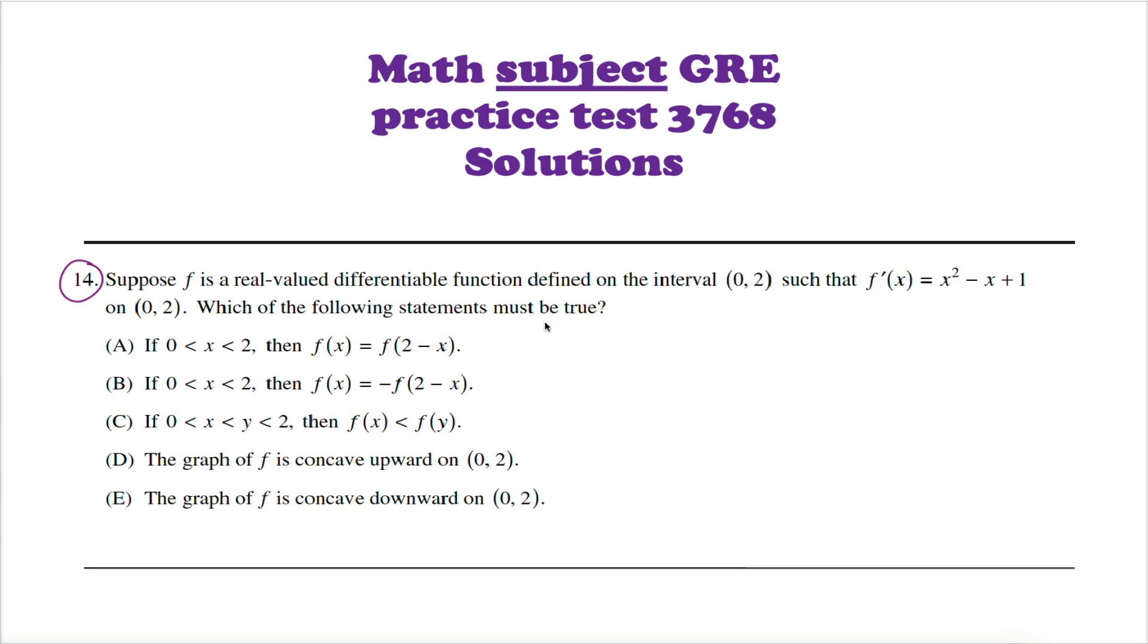Alright, question 14 on the Math Subject GRE Practice Test. What we're told is we have this function f. It's a real valued differentiable function on the interval from 0 to 2, and we know the derivative of the function is x squared minus x plus 1, again on this interval.